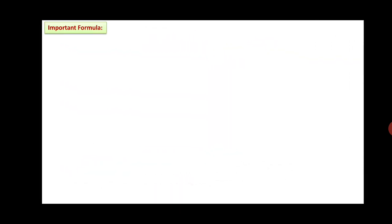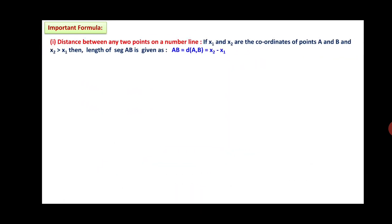Before discussing those, let us revise the important formulas discussed in this topic. Distance between any two points on a number line: if x1 and x2 are the coordinates of points A and B, and x2 is greater than x1, then the length of segment AB is given as AB equals x2 minus x1.